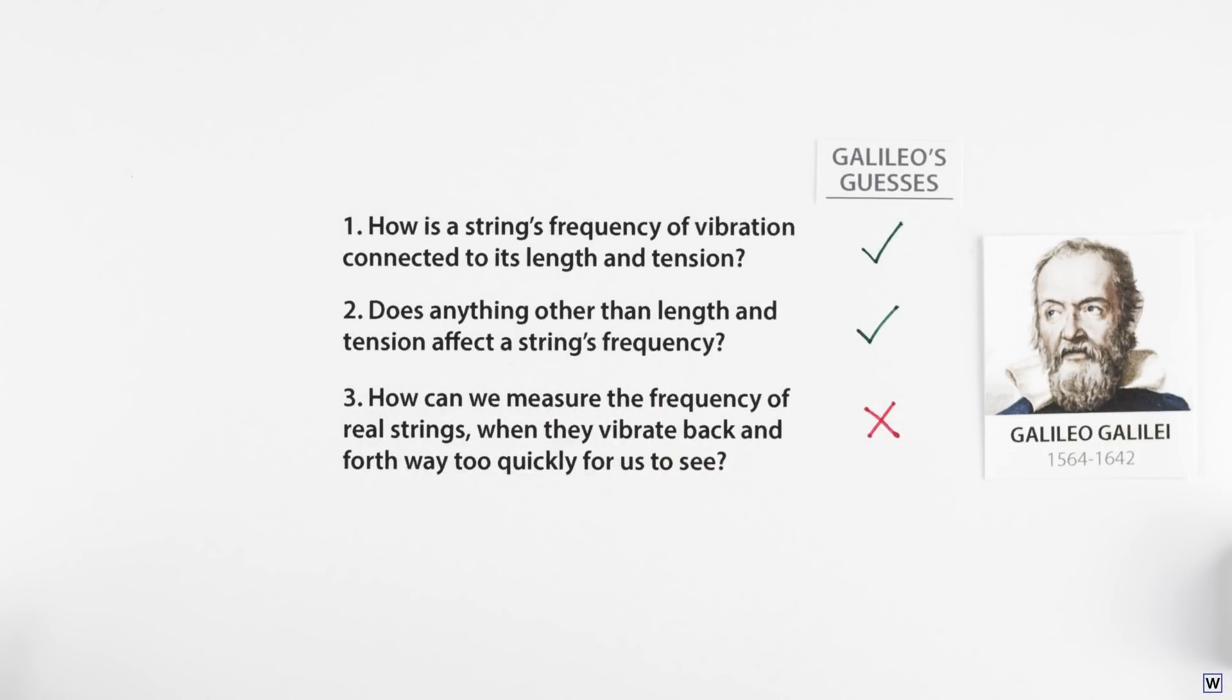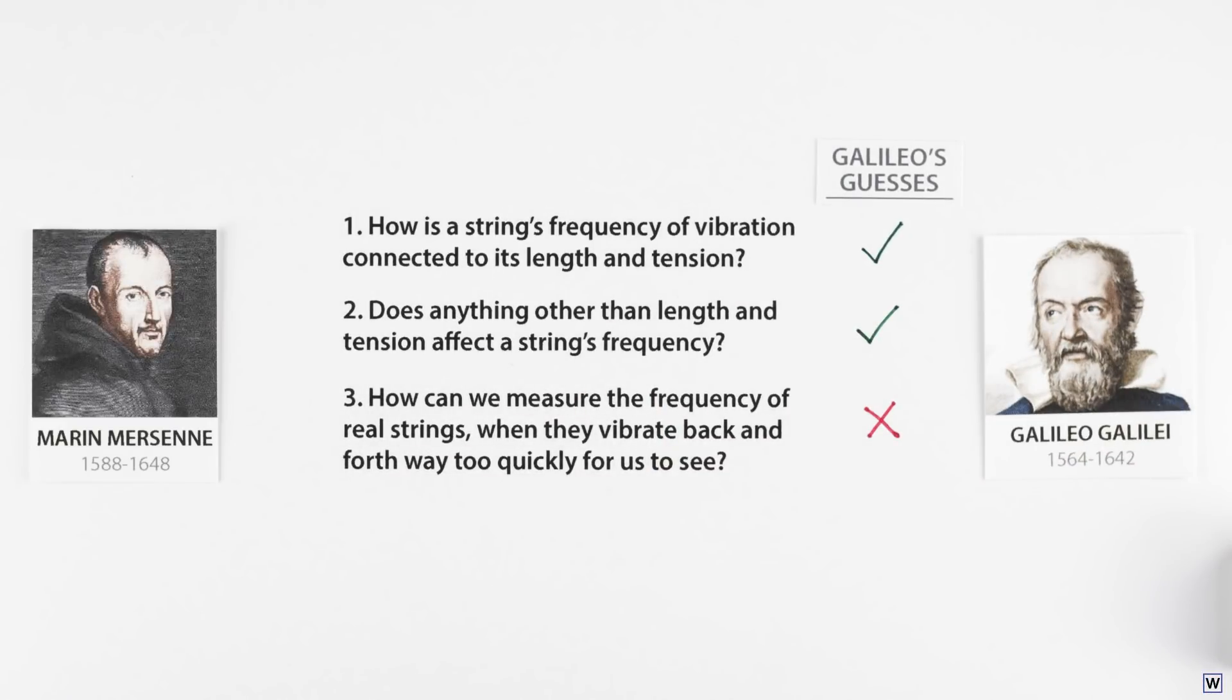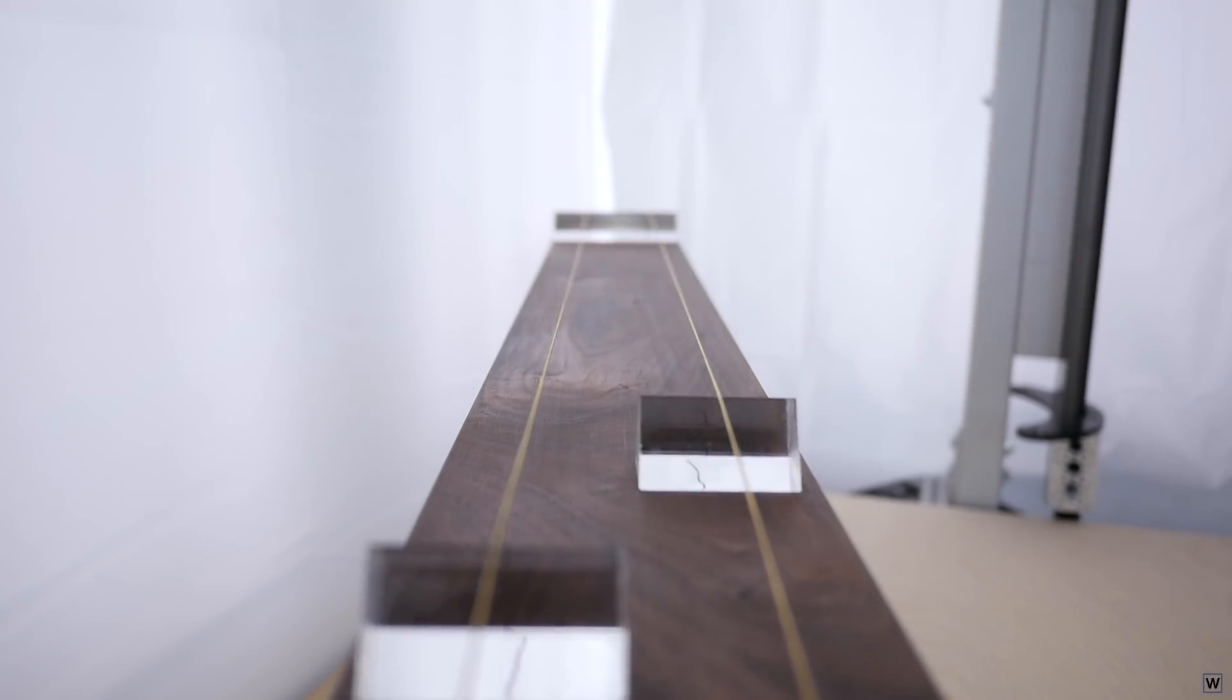Last time, we left off wondering how the French priest and scientist Marin Mersenne did what Galileo said was impossible: measuring the frequency of a vibrating string.